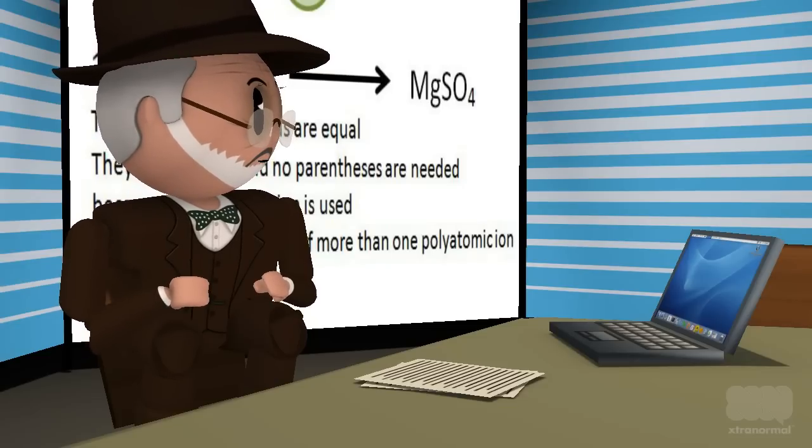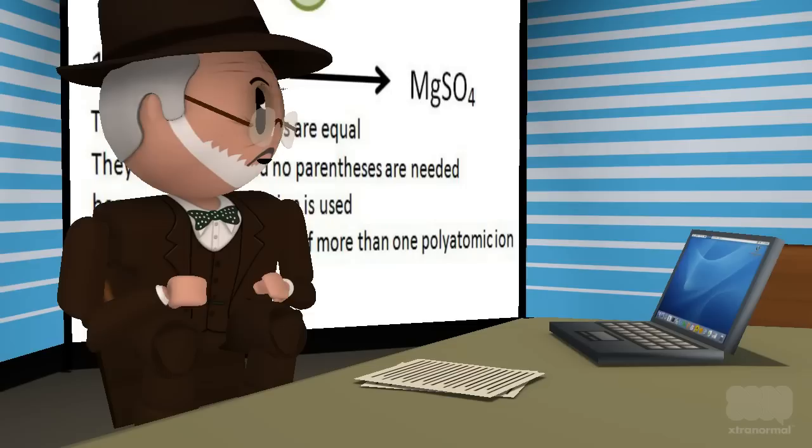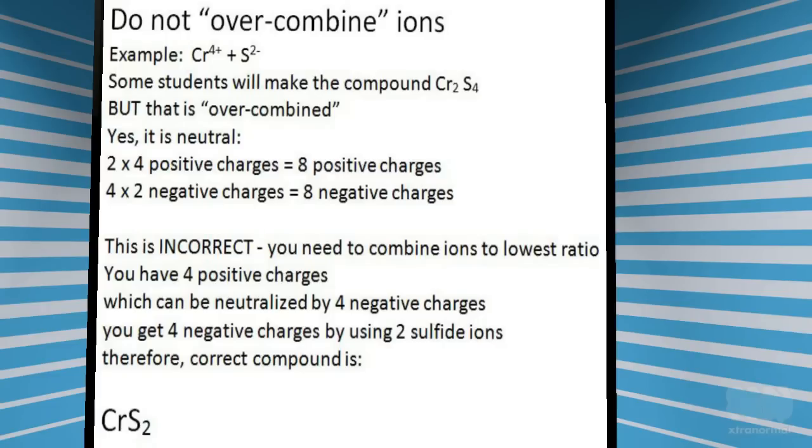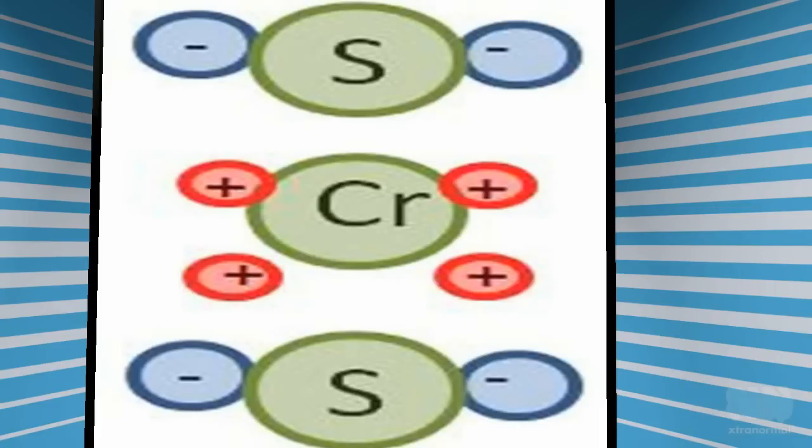There is only one more note. Sometimes students are tempted to overcombine the ions. That is because they learned a different approach from a previous chemistry class. You only need to determine a ratio for the ions that results in a neutral compound. That ratio should be the smallest possible number.